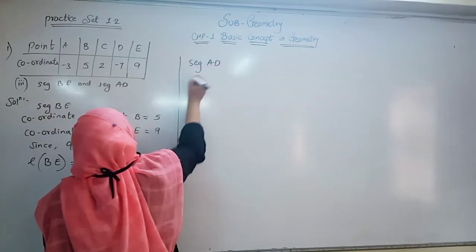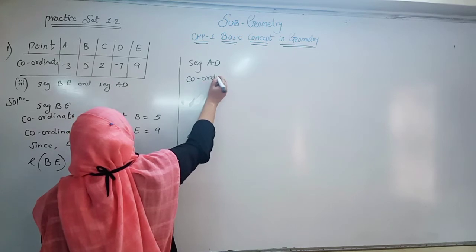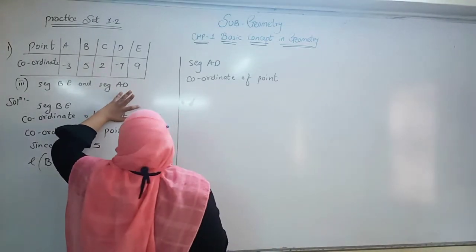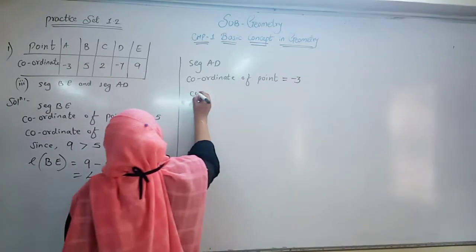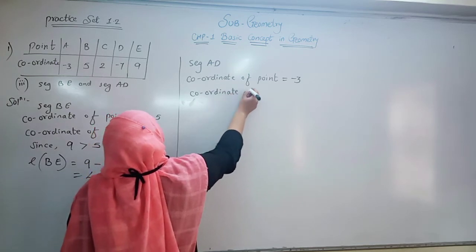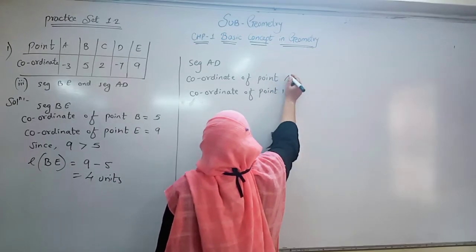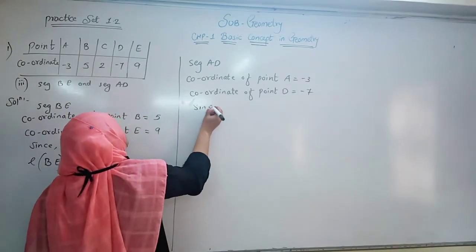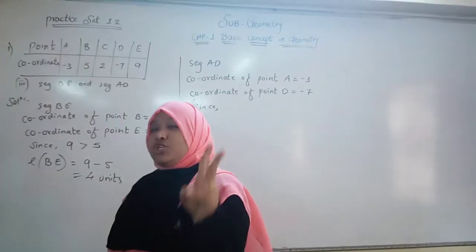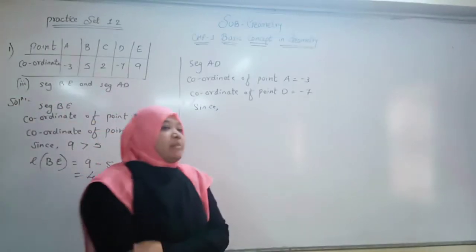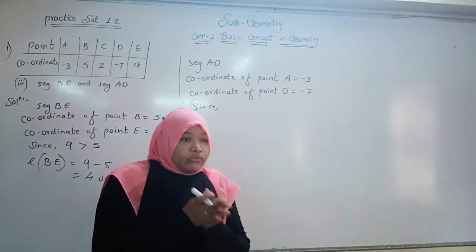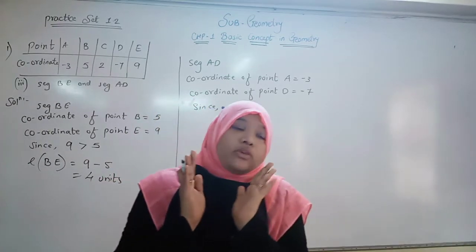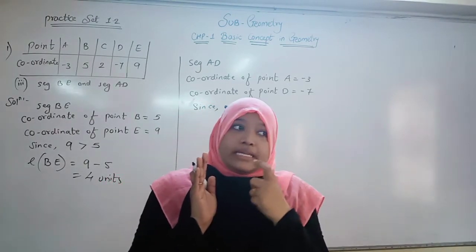Now we do Segment AD. Coordinate of point A is minus 3, and the coordinate of point D is minus 7. Now this is a brain challenge — we have two negative numbers. Which number is smaller and which is bigger? This concept should be very clear in your mind. We have an integer number line.